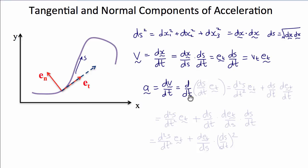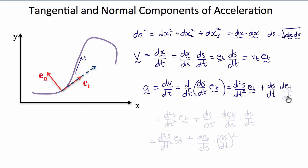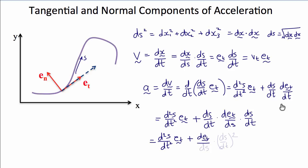Therefore, the acceleration dv dt is d dt of ds dt times the unit tangent vector e_t, which equals by the chain rule d²s dt² times e sub t, plus ds dt times d e_t dt. This further expands to d²s dt² times e sub t plus d e_t ds times ds dt, giving us d²s dt² times e_t plus d e_t ds times (ds dt)².